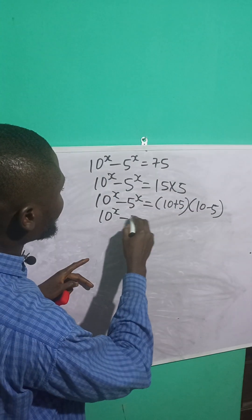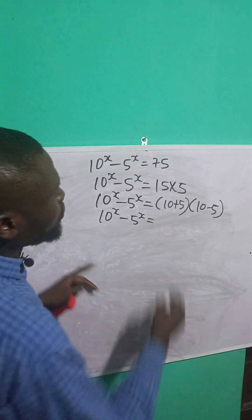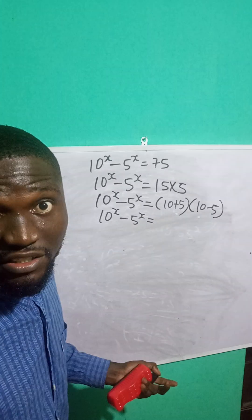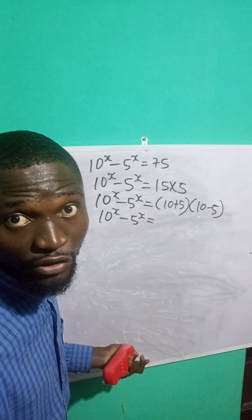So 10 raised to the power x minus 5 raised to the power x is equal to, do you know that this is the difference of two squares? This is difference of two squares, so I can apply this difference of two squares.